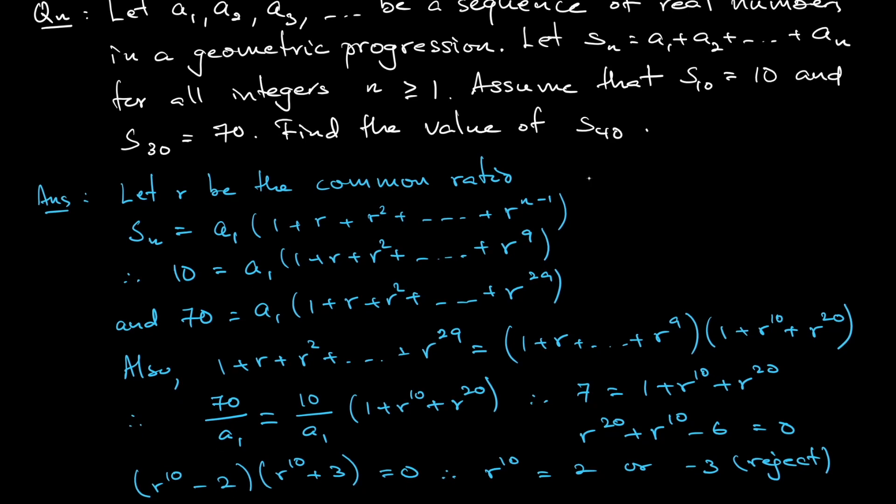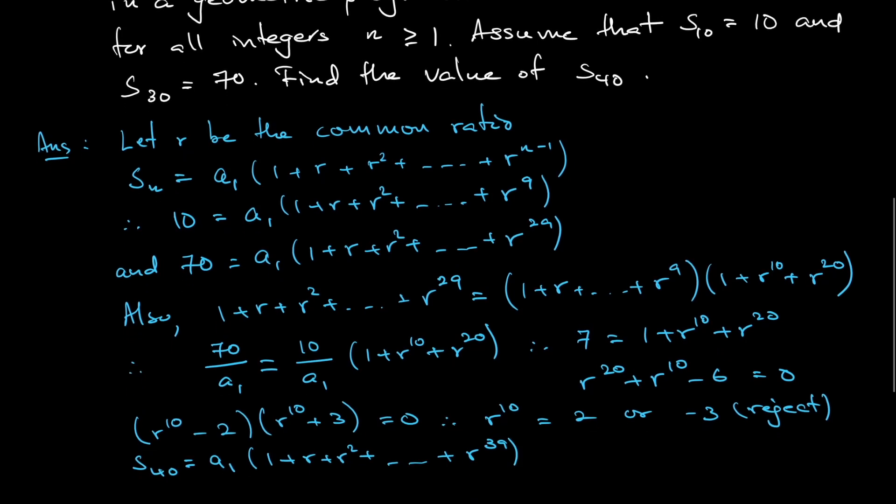Remember what we want to find. We want to find S40. S40 would be equal to a1 multiplied by 1 plus r plus r squared all the way until r to the power of 39. That means I can write, keep a1 as what it is, times 1 plus r plus r squared all the way until r to the power of 9.